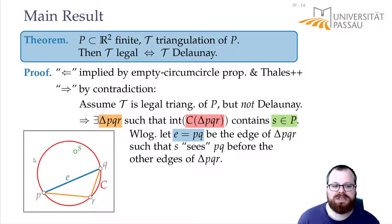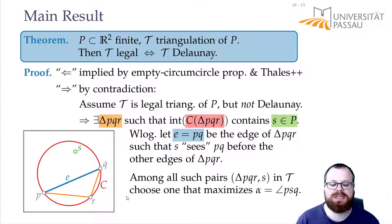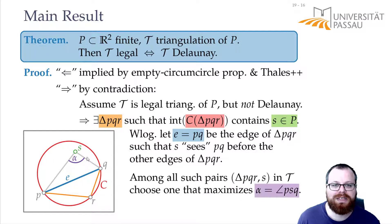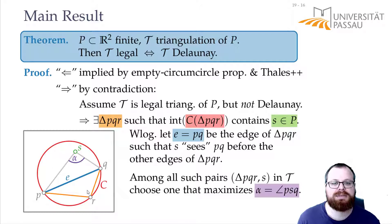This can of course happen more than once — there could be more than one triangle where the circumcircle is not empty. We now want to look at a very specific one: the triangle with non-empty circumcircle and point S such that the angle alpha here is maximum. So for all other pairs of triangle and vertex, this angle is smaller.